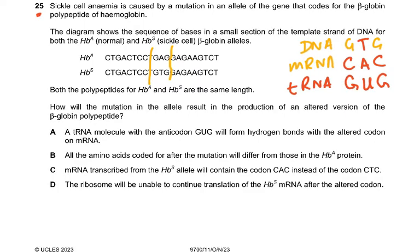Coming to question number 25. Sickle cell anemia is caused by a mutation in an allele of the gene that codes for the beta globin polypeptide of hemoglobin. The diagram shows a sequence of bases in a small section of the template strand of DNA for both the HbA, which is normal, and the HbS. The only difference is GAG and GTG — the rest is all the same. So the sickle cell anemia is because of the GTG.